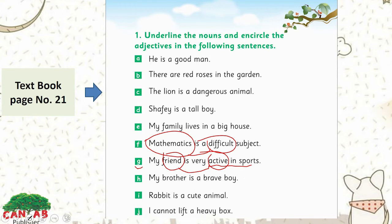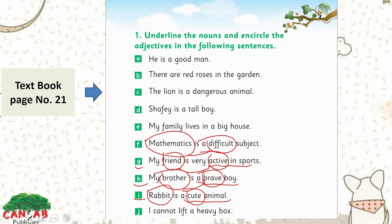Sentence H: 'My brother is a brave boy.' Brother is a noun, and brave is an adjective describing the brother. Sentence I: 'Rabbit is a cute animal.' Rabbit is a noun, and cute is an adjective — it is the quality of the noun. Sentence J: 'I cannot lift a heavy box.' Box is a noun, and heavy is an adjective describing the quality of the box.